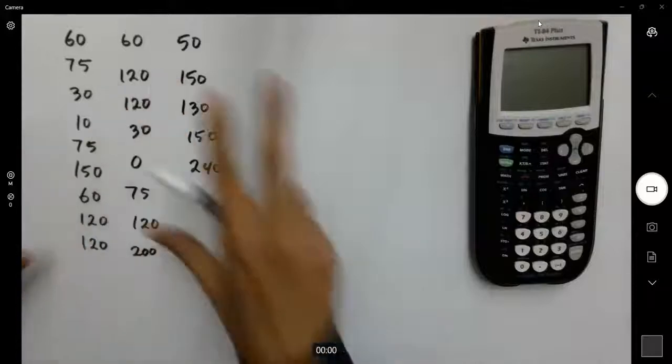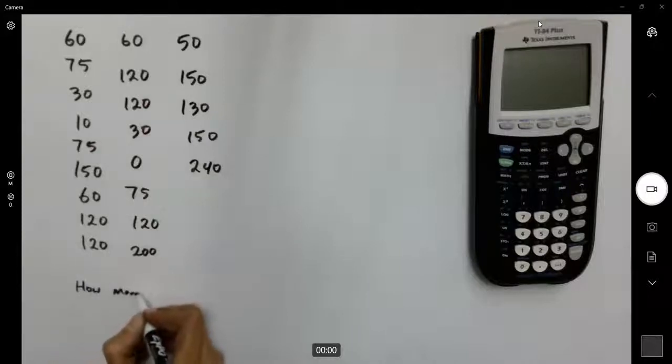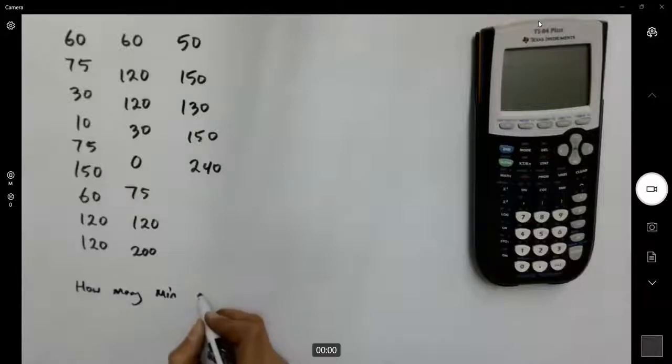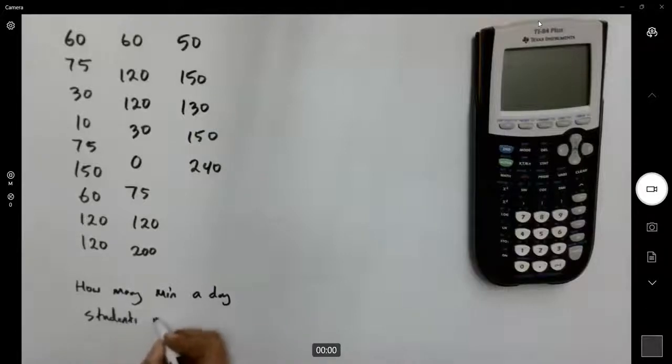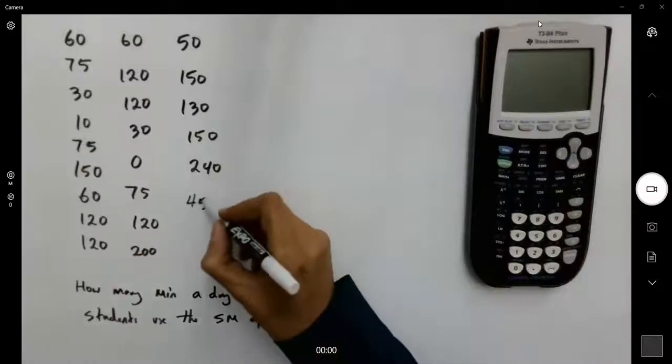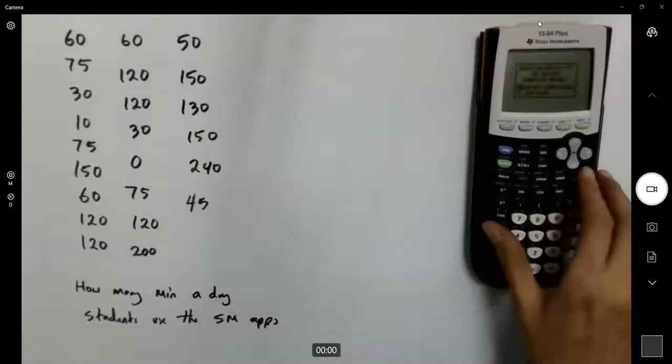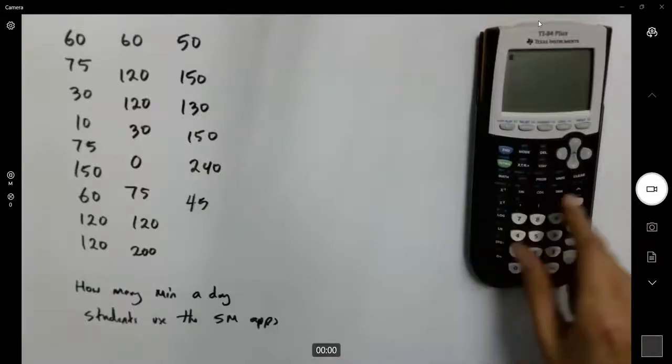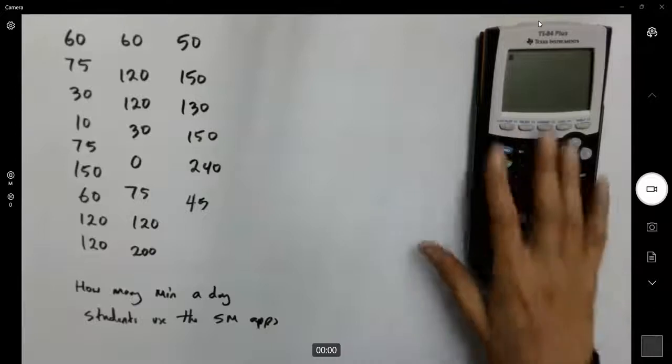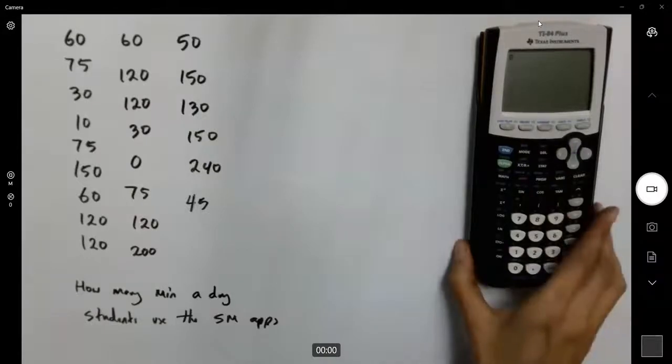Okay, everyone. We collected the data about how many minutes students using their social media app. These are the data that we have. So we're going to use our calculator. What are we going to do? We're going to turn on the calculator. After that, reset your calculator because there might be some functions that are already here.